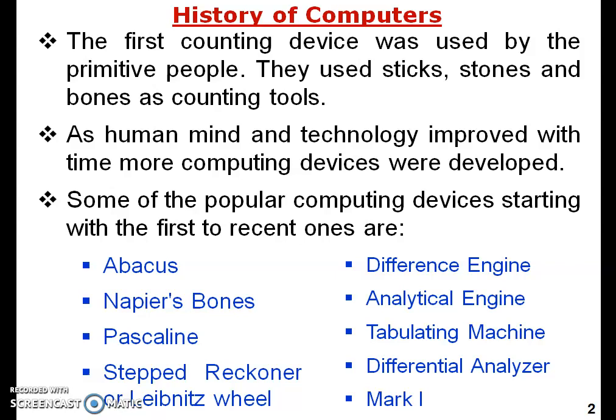The major computing devices in history include: Napier Bones, Pascaline, Stepped Reckoner or Leibniz Wheels, Difference Engine, Analytical Engine, Tabulating Machine, Differential Analyzer, and Mark One. These are the different types of historical calculating machines, each known by different names.